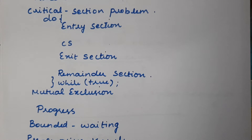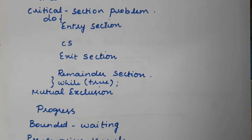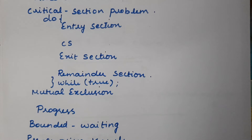Hello everyone. In this video, we will discuss the critical section problem. In the last video, we discussed how we execute cooperating processes and what problems we face in cooperating processes — when we may get an incorrect final outcome. In order to avoid that incorrect result, whenever any two processes try to access common data, we should avoid that incorrect result. For that, we are getting into the critical section problem.